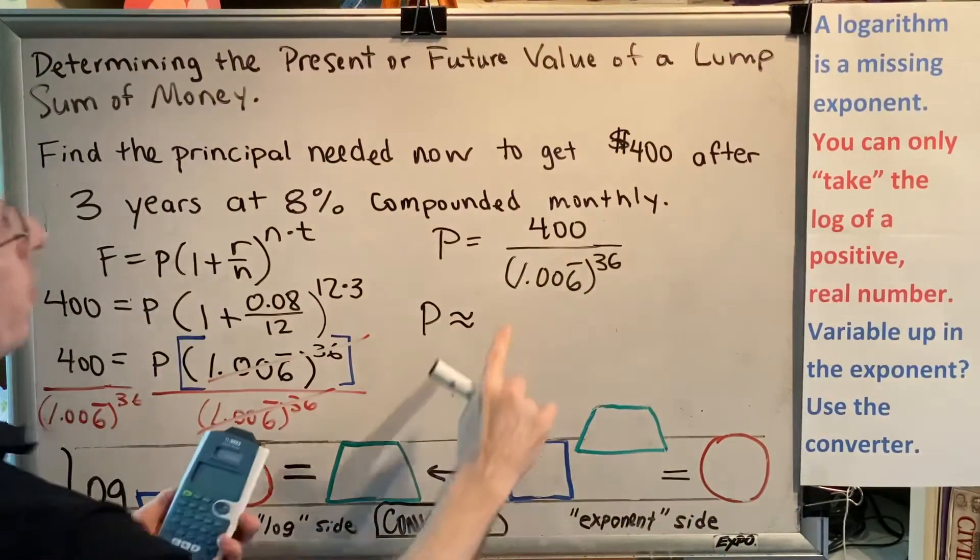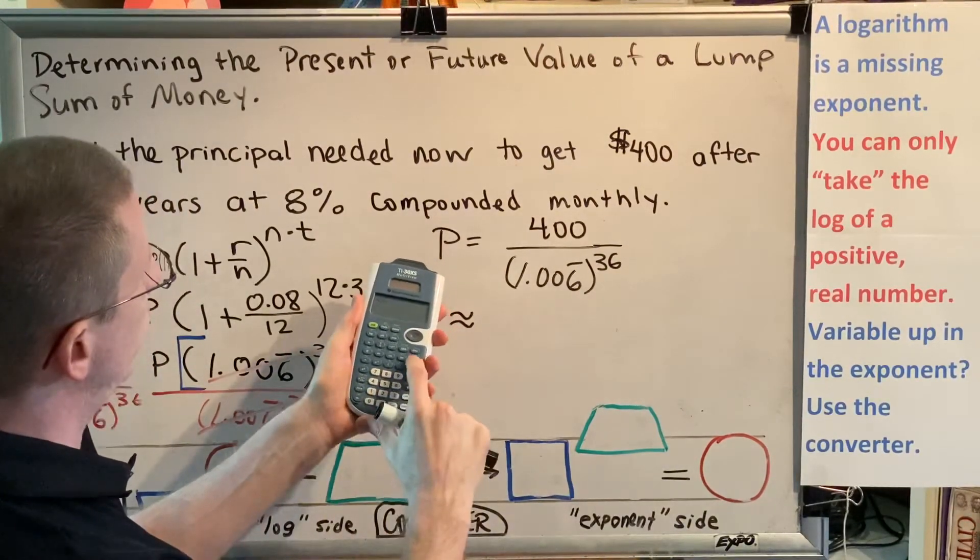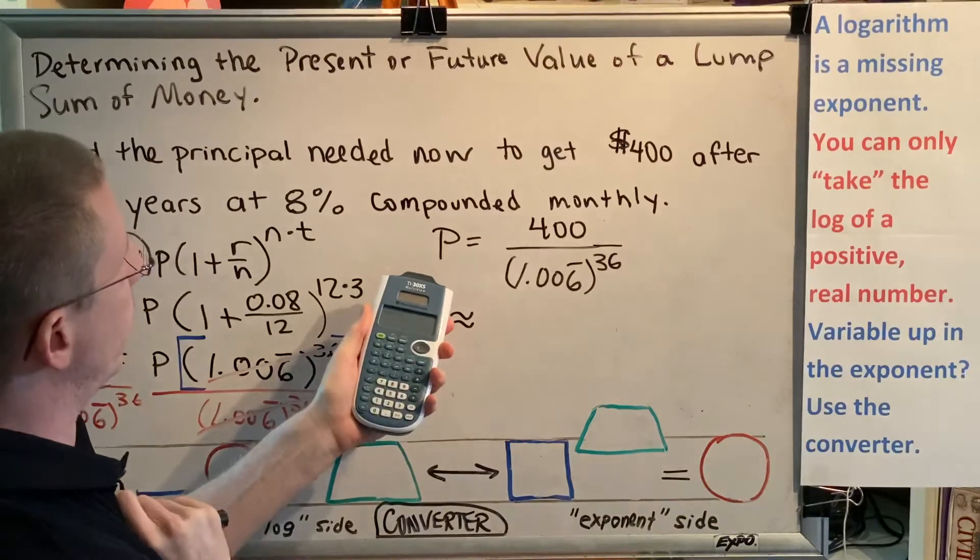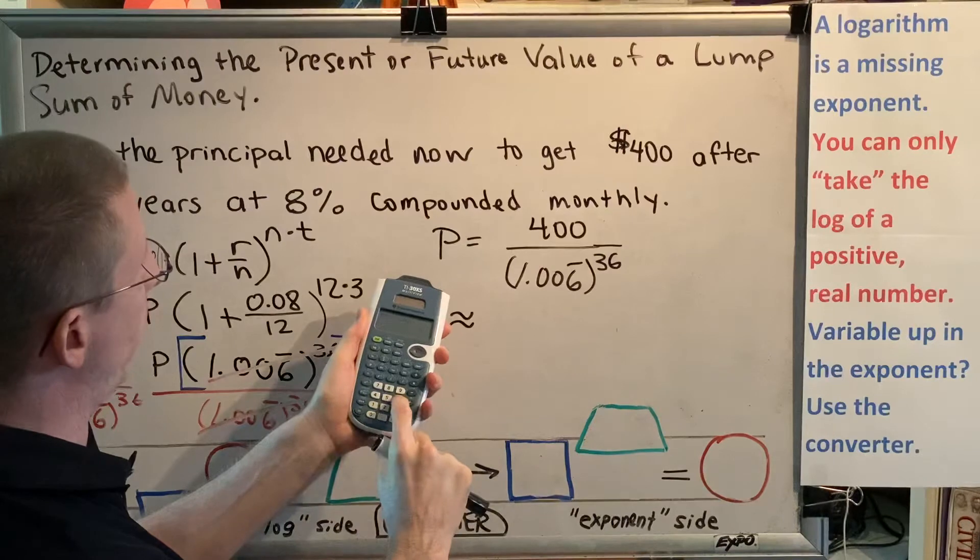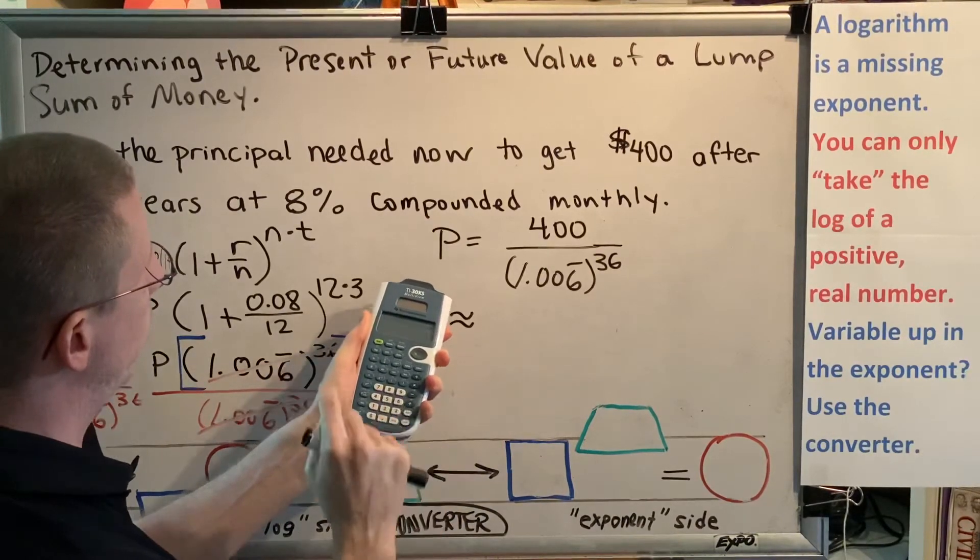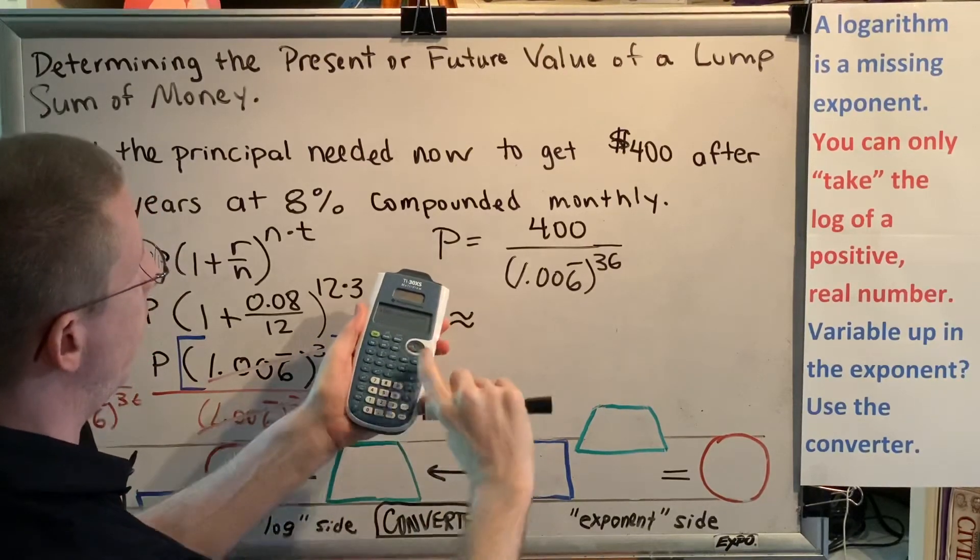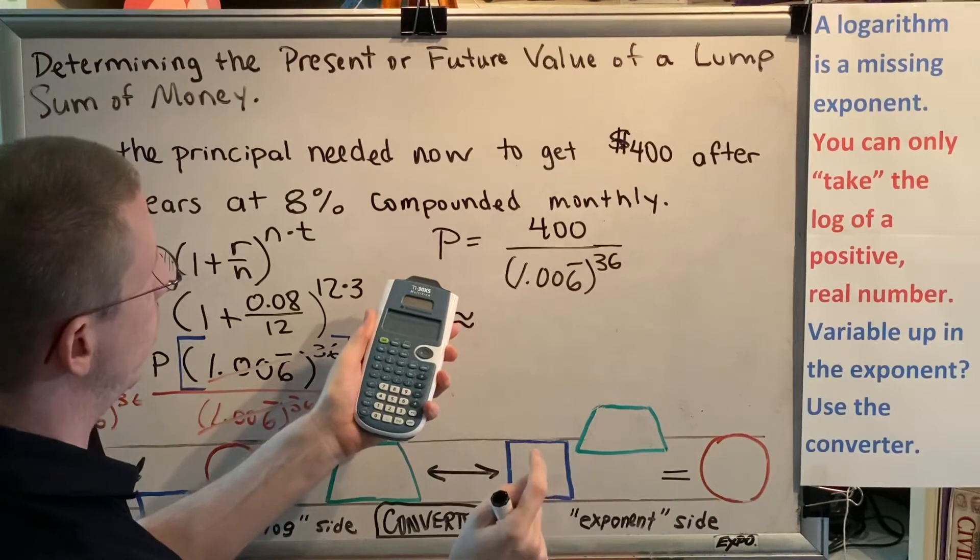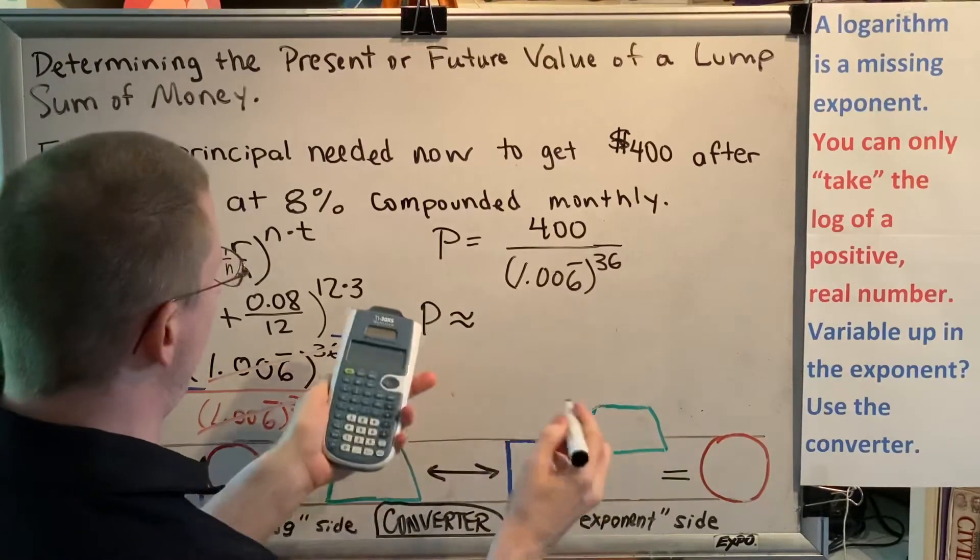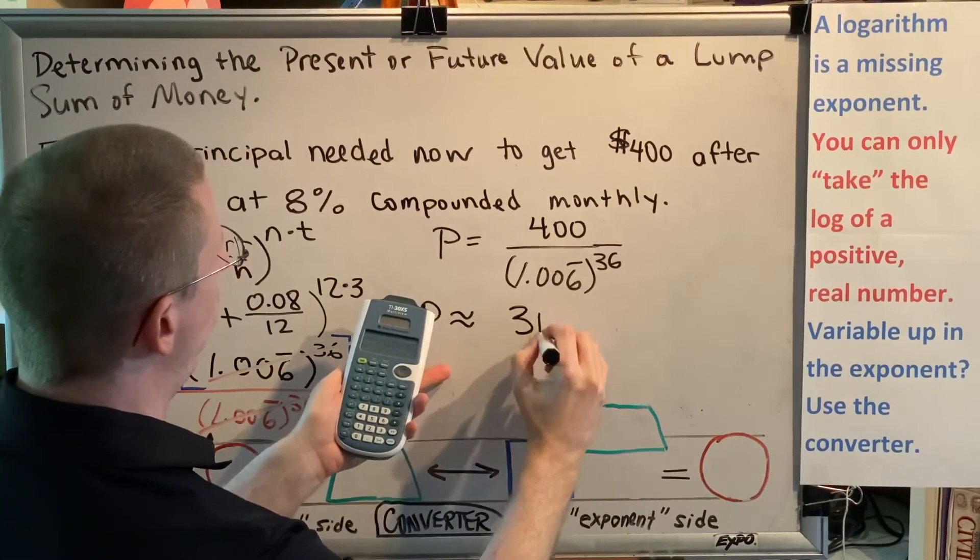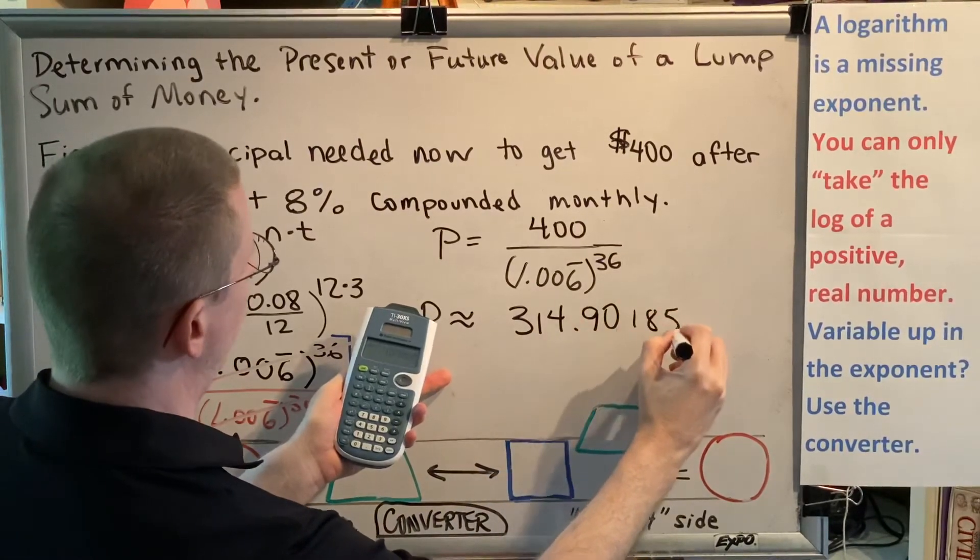So I'm going to have to use some parentheses here so that my entire denominator is in parentheses. So I'm going to do 400 divided by, open parenthesis, 1.00, and then a bunch of sixes. I'm just going to hit a bunch of sixes here, raised to the 36th power. Then a right arrow to get outside of my exponent so I can close the parentheses for my denominator and hit enter. And the value I get is 314.901852.